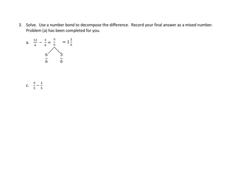Let's take a look at some more problems of a different type. Let's take a look at number three. Number three asks us to solve. Use a number bond to decompose the difference. Record your final answer as a mixed number. Problem A has been completed for you. Let's take a look at problem A. Problem A started with twelve sixths, and then they subtracted three of the sixths. So they had twelve of something. They subtracted three of that thing. That left them with twelve minus three, or nine of that thing. And those things were sixths, so they had nine sixths.